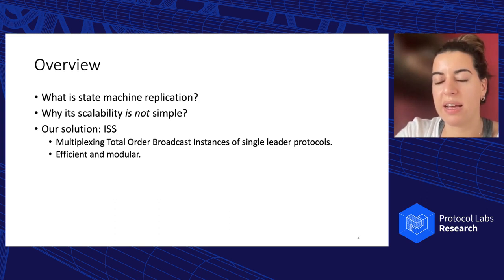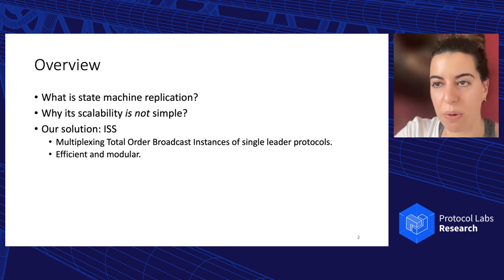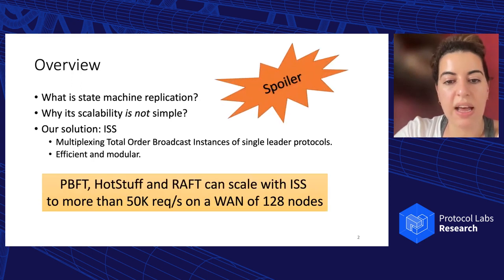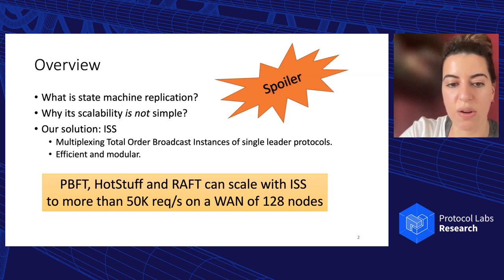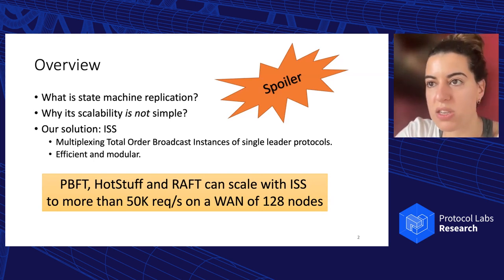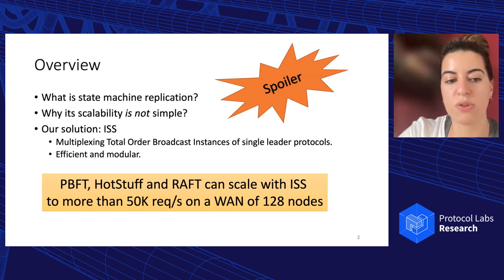ISS is a protocol that multiplexes single-leader protocols that solve total order broadcast into a scalable solution that again solves total order broadcast. While such multi-leader total order broadcast protocols may already exist, we want to emphasize that our solution is both efficient and modular. As a spoiler, when we implemented ISS with known protocols such as PBFT, HotStuff, and Raft, we managed to make them scale on 128 nodes with a performance of more than 50,000 requests per second on a wide area network with one gigabit-per-second connections. I would also like to highlight that this is not a sharding protocol — this performance is while maintaining a common total order among all instances.